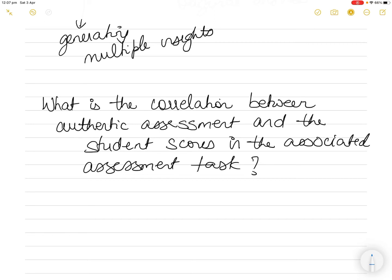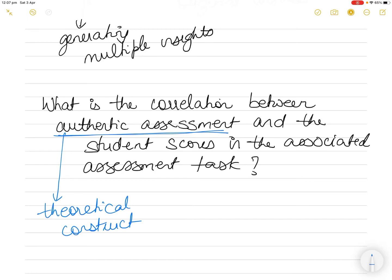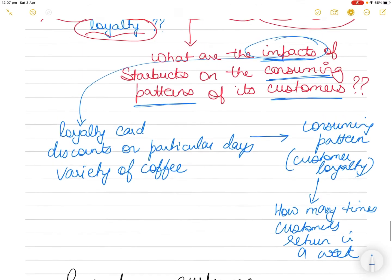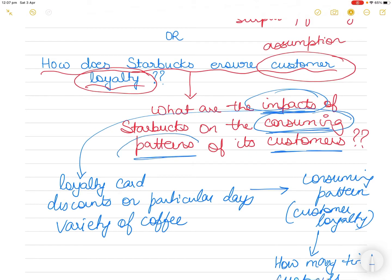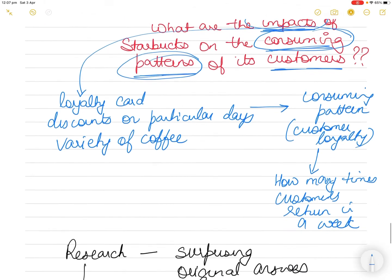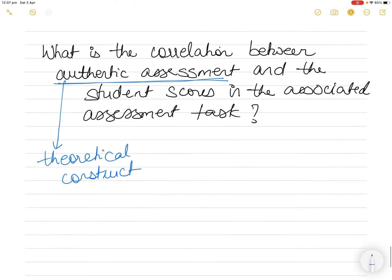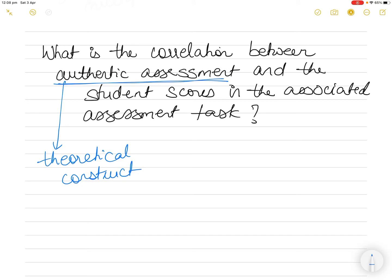You are going to know everything about authentic assessment - this is the theory. The theory behind this research question will be the theory of authentic assessment. If I look at the previous Starbucks question, the consuming patterns of the customers becomes the theoretical construct - what leads to customers becoming repeat customers, or why they return to the same coffee shop. So here in the authentic assessment question, the theoretical construct means you have to read all the literature. This is where the literature review comes into place.